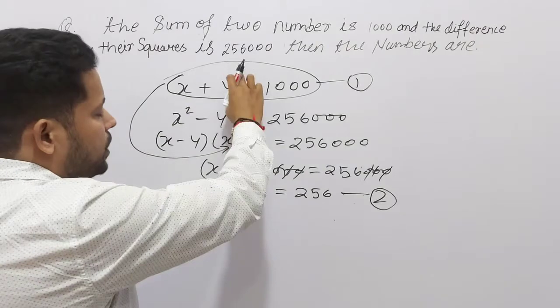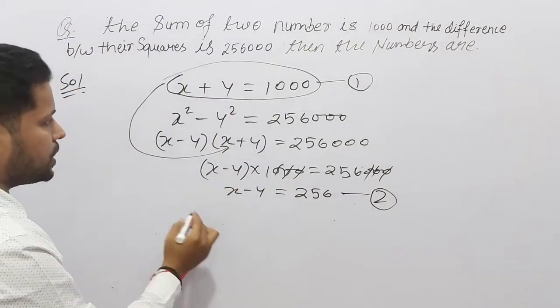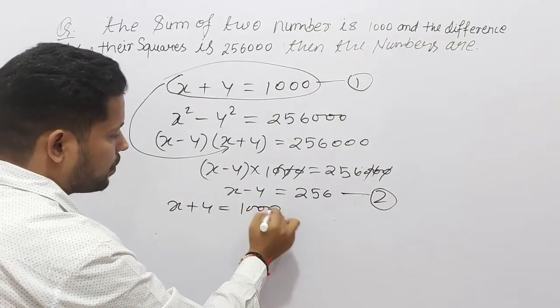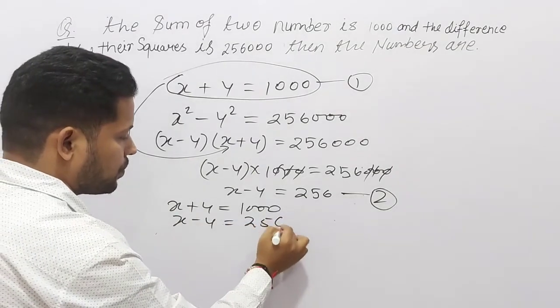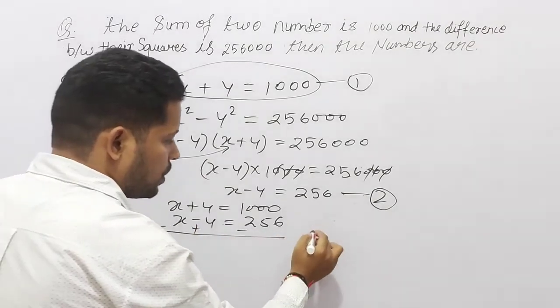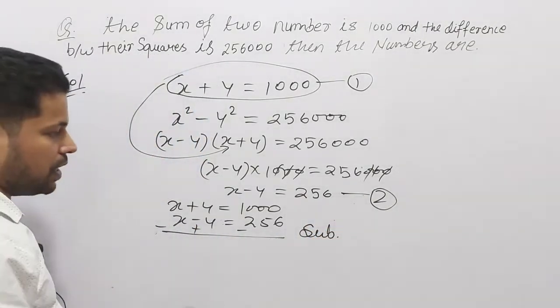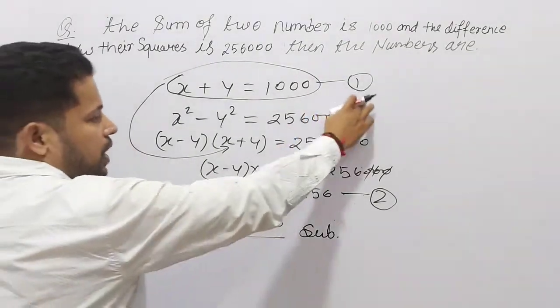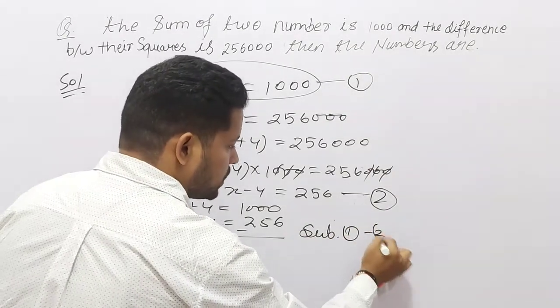Okay? So, अभी हम इनको eliminate करेंगे. Okay? So, जब हम eliminate करेंगे. So, हम लिख सकते x plus y equal to 1000 और इधर x minus y equal to 256. Okay? इन्हें आप subtract करेंगे. So, subtract करने पर हमें क्या मिलेगा? So, हम subtract कौन सा कर रहे है? इसको आप ध्यान दीजेगा. तो first minus second हम कर रहे है. Okay? So, subtract first minus second.